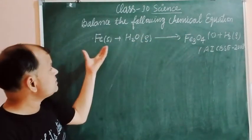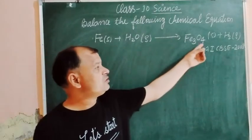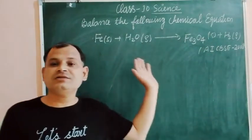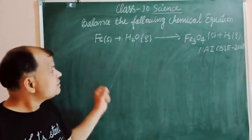So here is a reaction: Fe plus H2O equals Fe3O4 plus H2. And this is an unbalanced chemical equation.